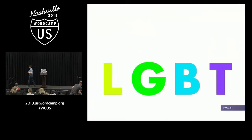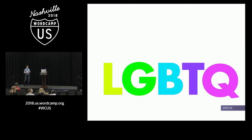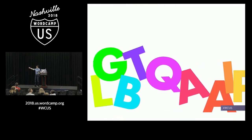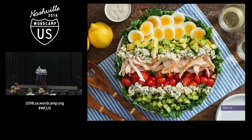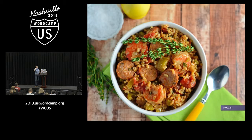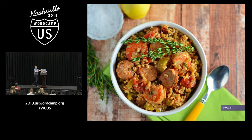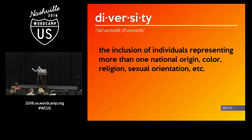And then we have the LGBTQA+ — we keep adding more letters. So I just like to call it the beautiful, wonderful rainbow alphabet soup. Well, although I suppose it's more like jambalaya. I like jambalaya, because you can see each of the ingredients — they're their own thing, but they come together in this amazing meal. And now I'm hungry. So we think about that kind of as a standard definition there.